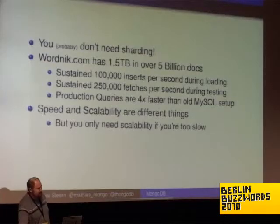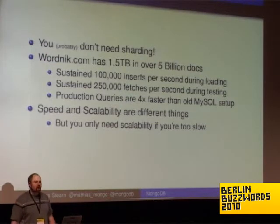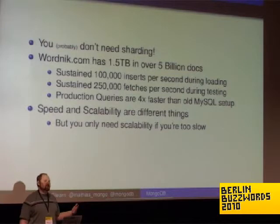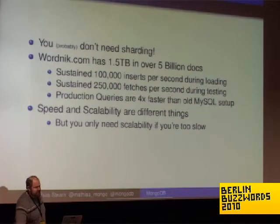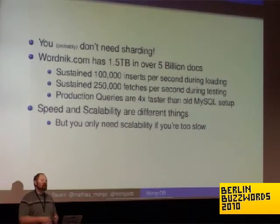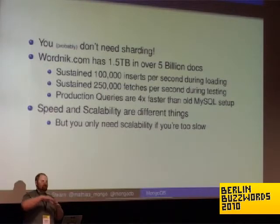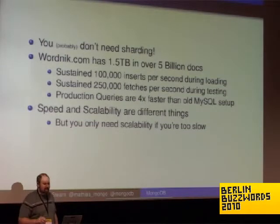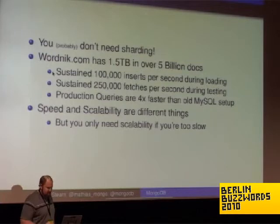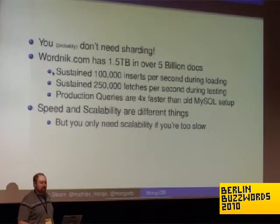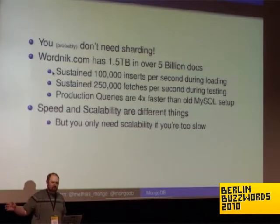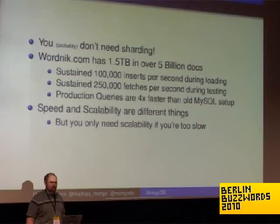As an example from one of our users: Wordnik.com, their attempt to collect a living dictionary of the English language, claims to have 1.7 billion words and growing at 200 new words per day. They keep track of historical usage of words and plot frequency charts of how usage has changed over time. During their initial dump from their old database to MongoDB, they noticed a sustained rate of 100,000 inserts per second — for 1.5 terabytes of data and 5 billion objects — and the full dump took about 12 hours.